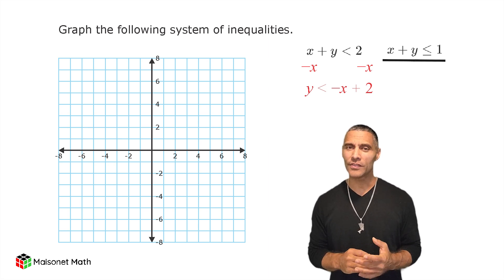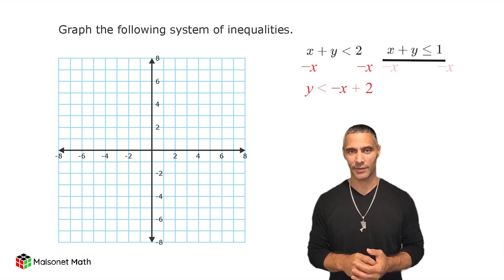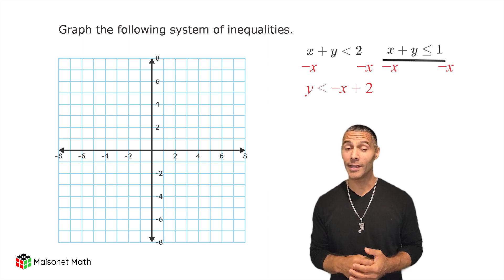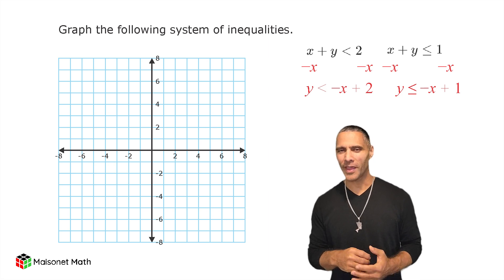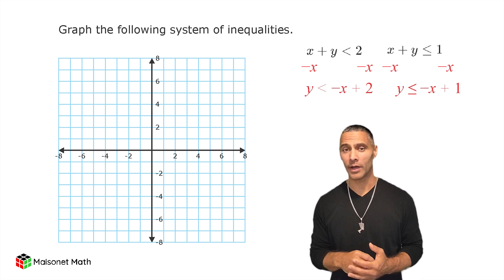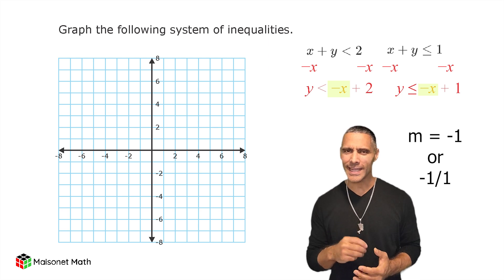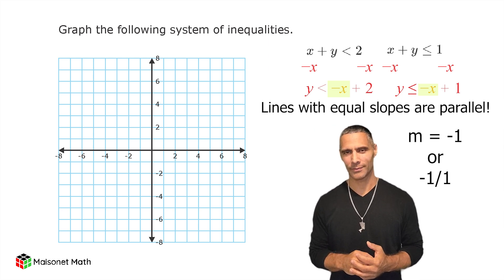For the second inequality, we do the same thing. We move the positive x to the other side of the inequality, giving us y is less than or equal to negative x plus 1. Notice that both sides will have a slope of negative 1. Lines with the same slope will be parallel to each other.